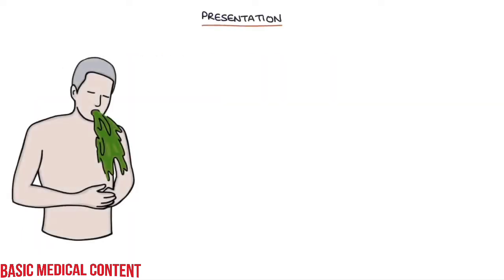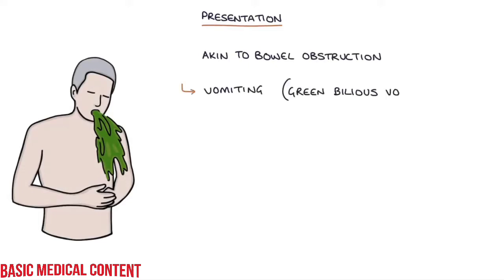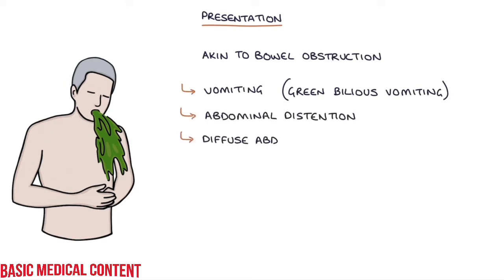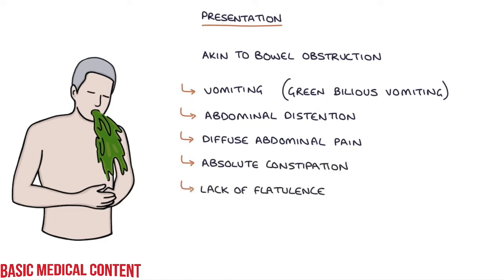The signs and symptoms of a volvulus are akin to bowel obstruction, with vomiting — particularly green bilious vomiting — abdominal distension, diffuse abdominal pain, absolute constipation, and a lack of flatulence.